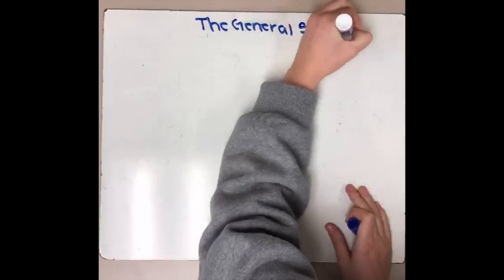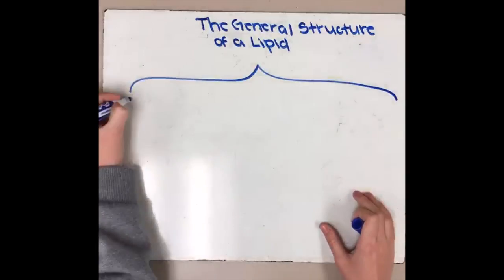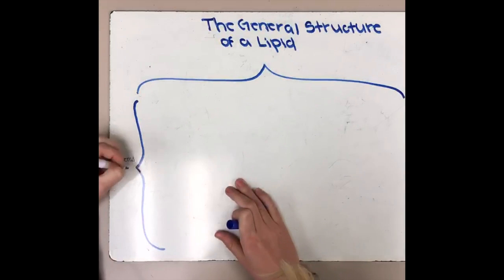There are different types of structures of lipids, such as the structure for a phospholipid, but this diagram is showing the general structure of a lipid.